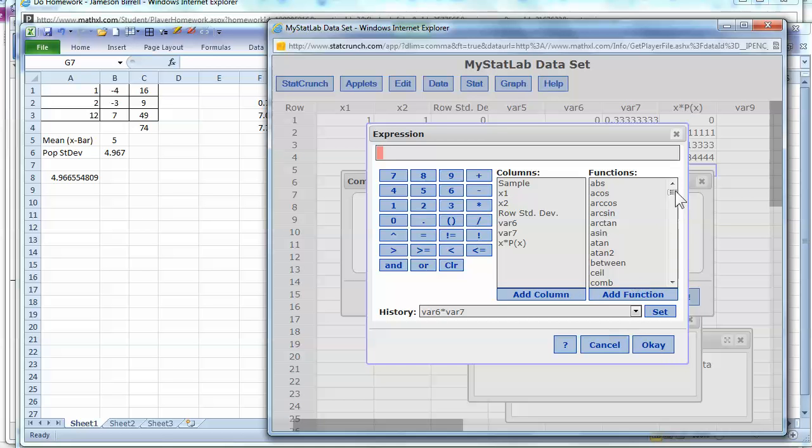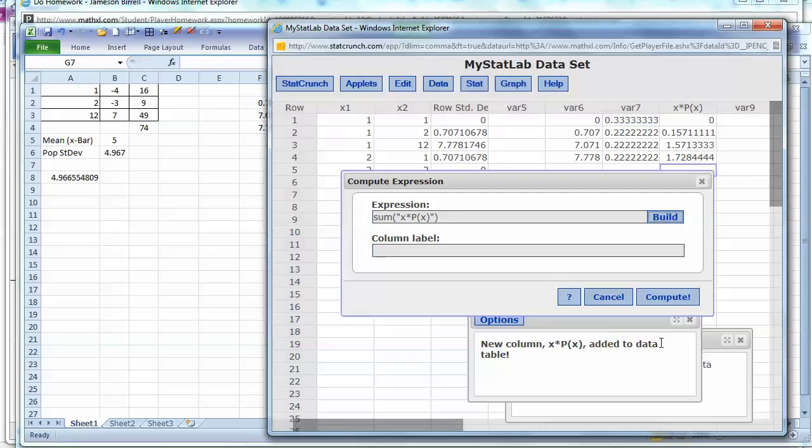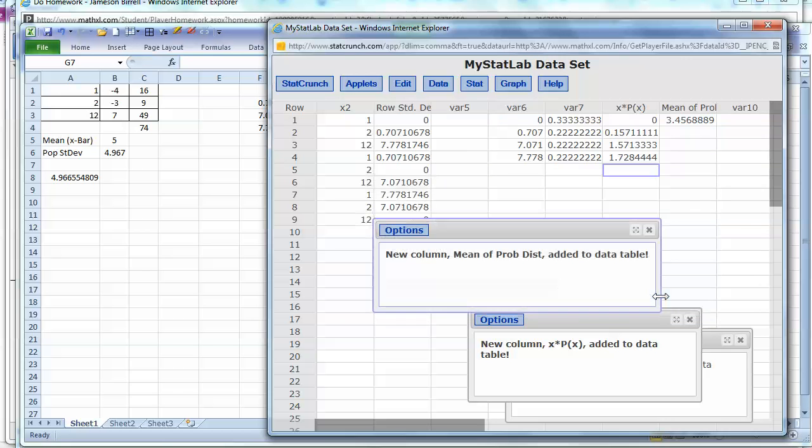Okay, and then we just want the sum of all those. So we should be able to just double-check here. Now we should be able to go under data, another computation. Get the expression where we sum, using the function sum. I think I could have just typed it in also. I'm going to sum up those products. And I'll just go ahead and call this mean. Actually, that'll be more descriptive. I'll say mean of probability distribution.